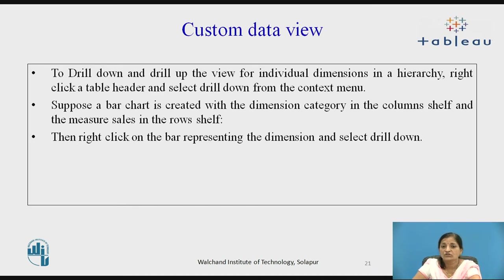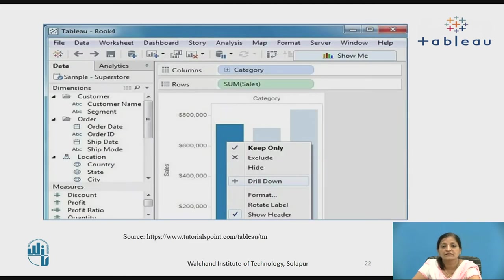To drill up and drill down the view for individual dimensions in a hierarchy, right-click a table header and select drill down from the context menu. Suppose a bar chart is created with the dimension category in the column shelf and measures in the row shelf — right-click on the bar representing the dimension and select drill down. You can click on the bar chart column and it immediately shows the drill down option.